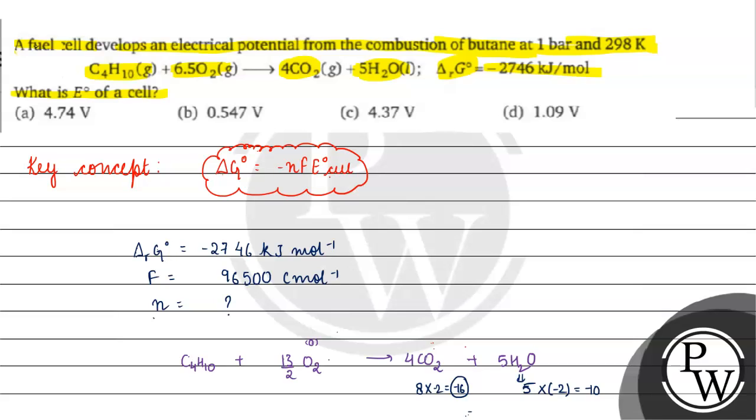Here we have 5 times minus 2 which equals minus 10. Total change in oxidation state of oxygen is minus 26. This means 26 electrons are involved when oxygen's oxidation state changes. Oxygen undergoes reduction.